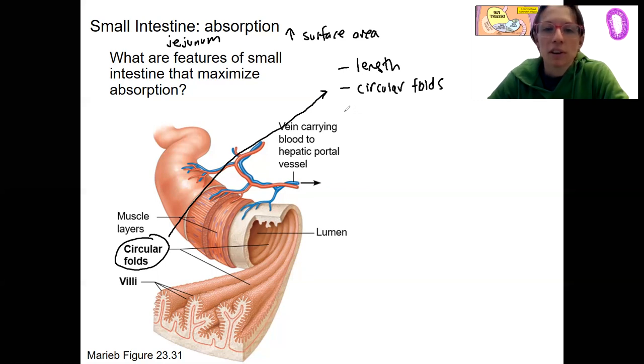Okay. Circular folds. Then we've got our villi, of course, right? These right here, these little things. Fingers visible at like 100x. So these finger-like projections that are part of the mucosa, right? The lacteal and the capillary bed in the middle.